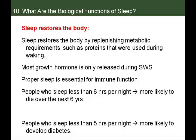Proper sleep is also very important for the immune system. Sleep deprivation leads to immune problems and getting sick more often. People who sleep six hours or less per night are more likely to die within six years. Those sleeping fewer than five hours are more likely to develop conditions like diabetes. Research consistently shows the fewer hours you sleep, the younger you die.